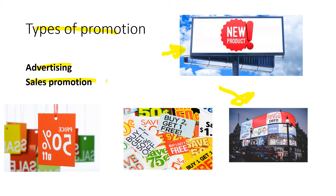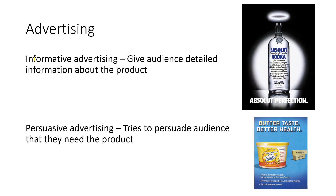Sales promotion is where we have offers — for example, 50% off, or buy two get one free, or buy one get one free. We'll go into more detail now. Advertising can be done in two ways.